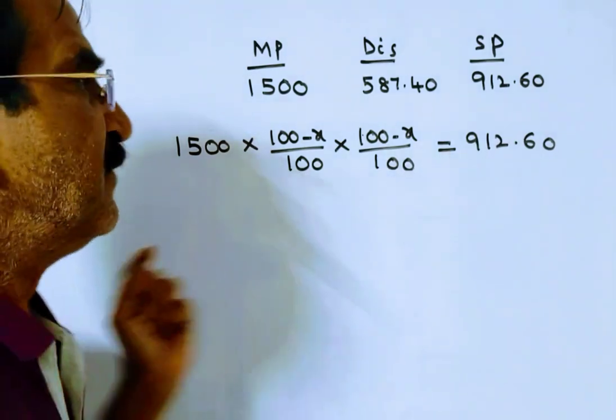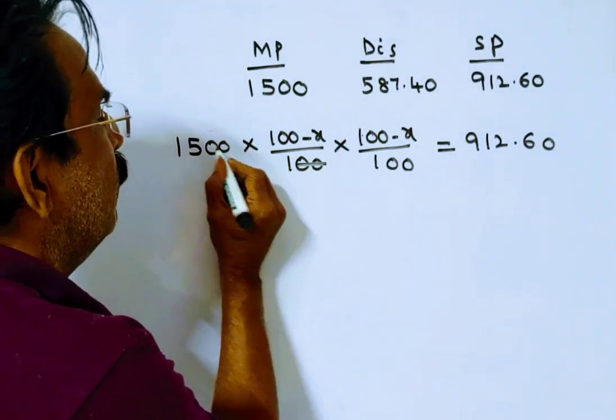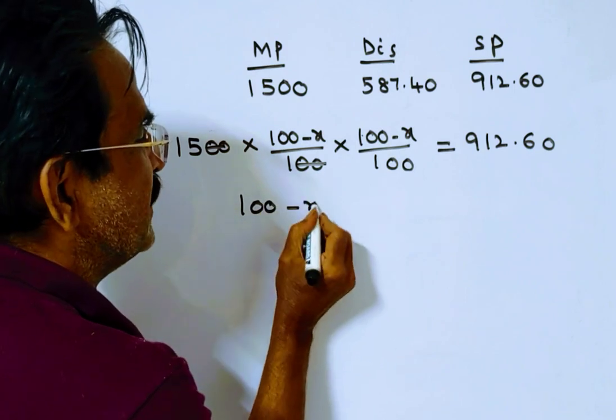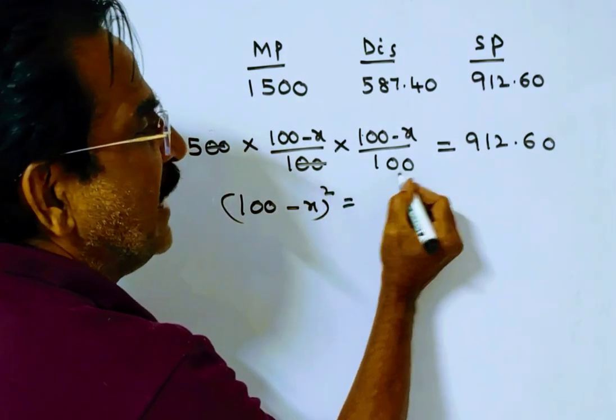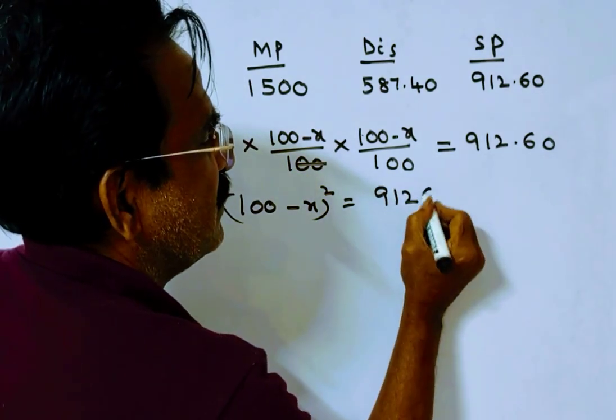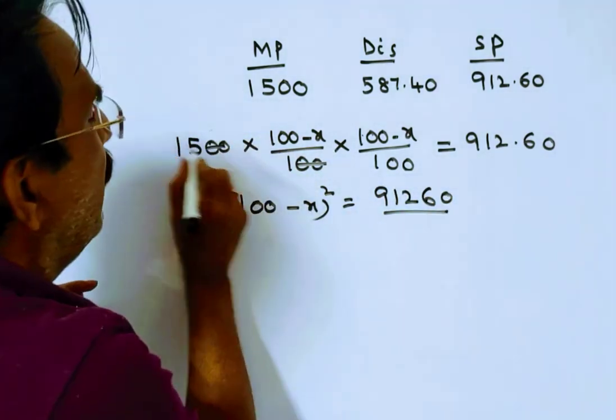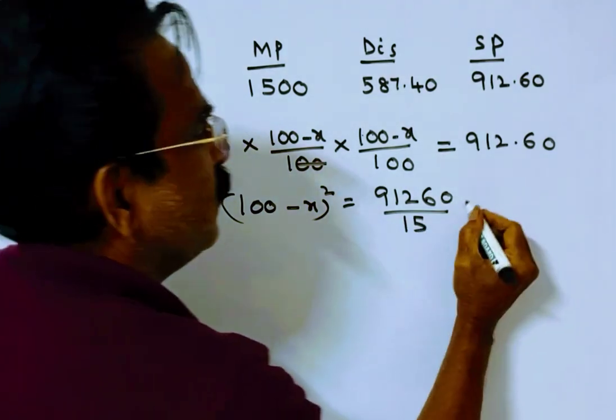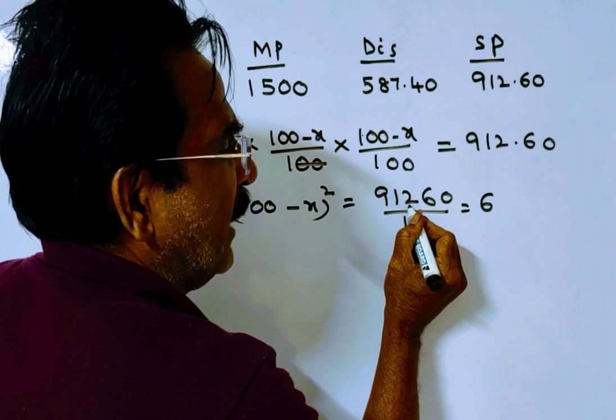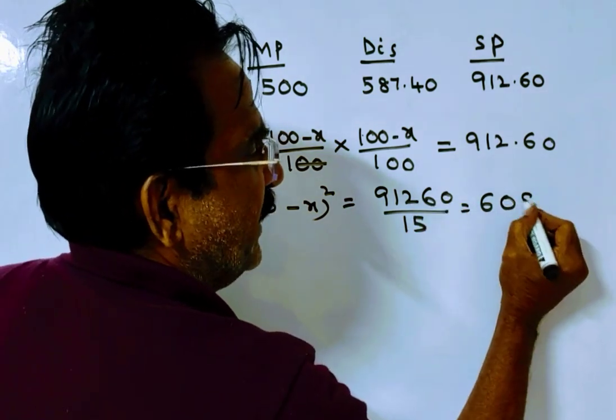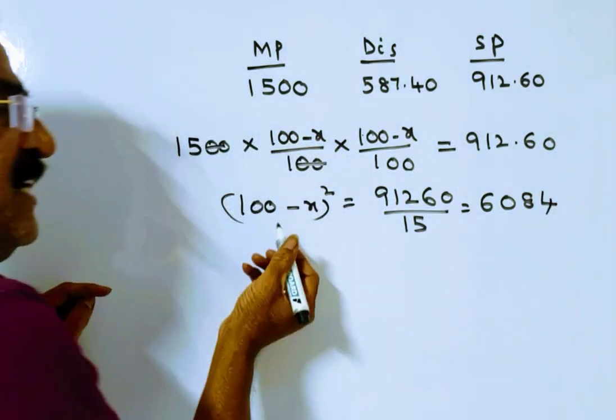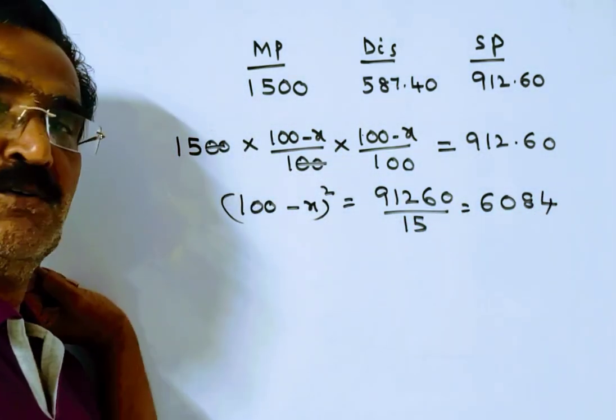Now, (100 - x)/100 times (100 - x)/100 is equal to 912.60/15. So 15 goes into 912.60... that's 60.84. 15 times 60 is 900, 15 times 4 is 60. So (100 - x)² equals 6084.